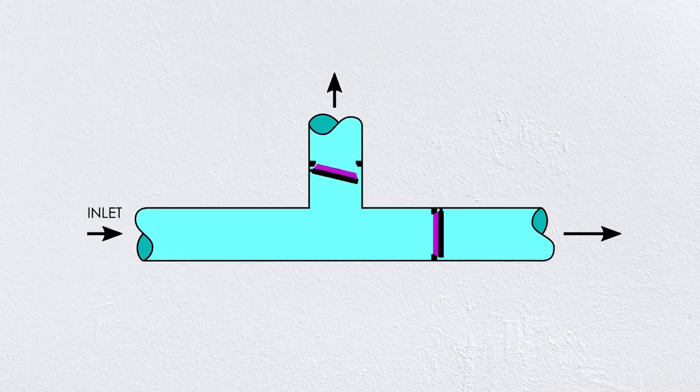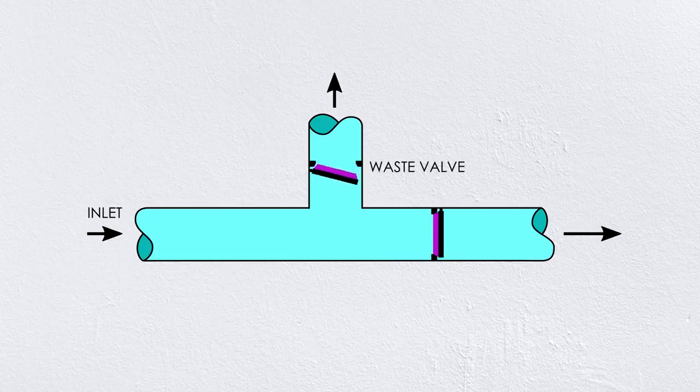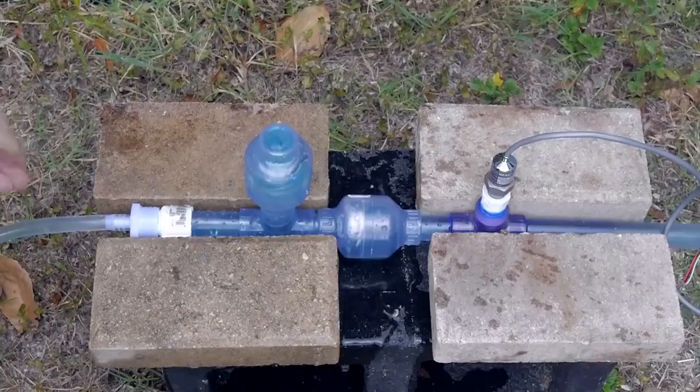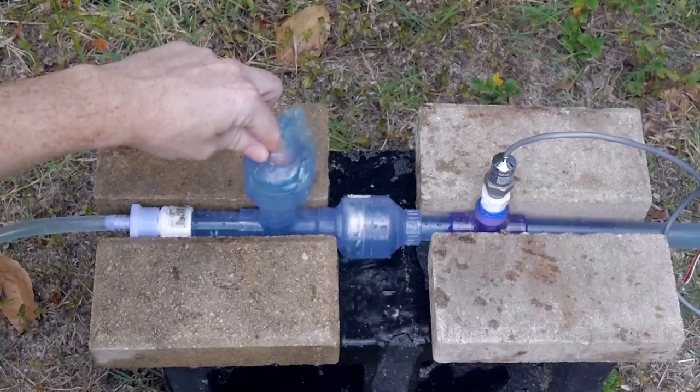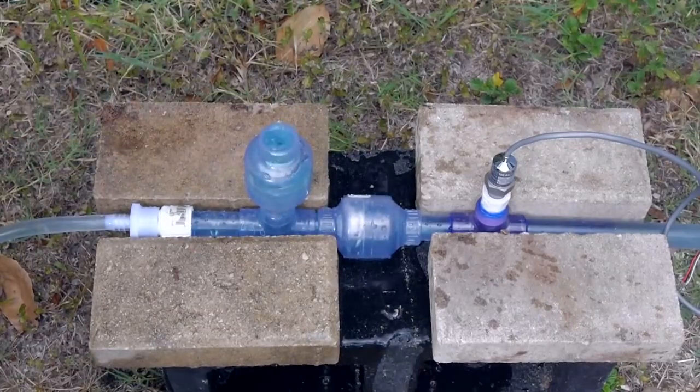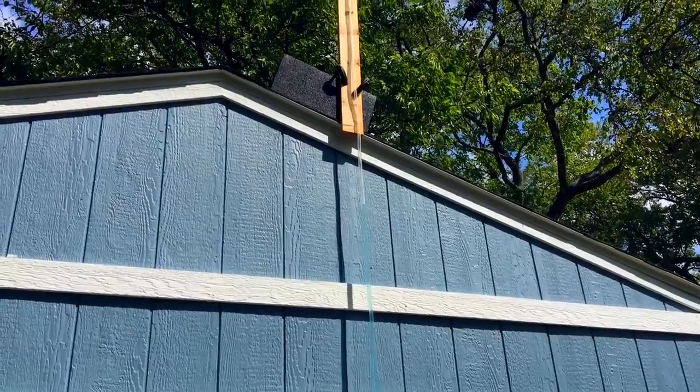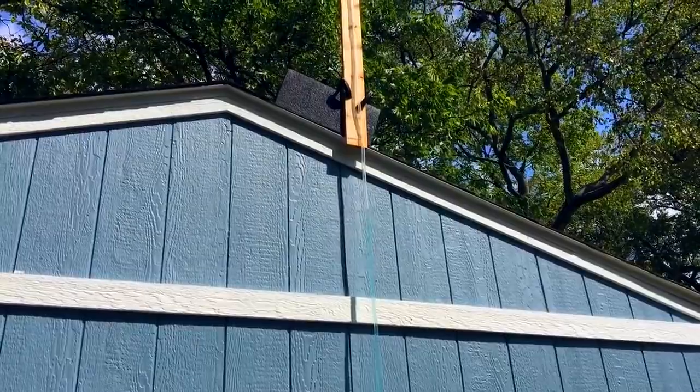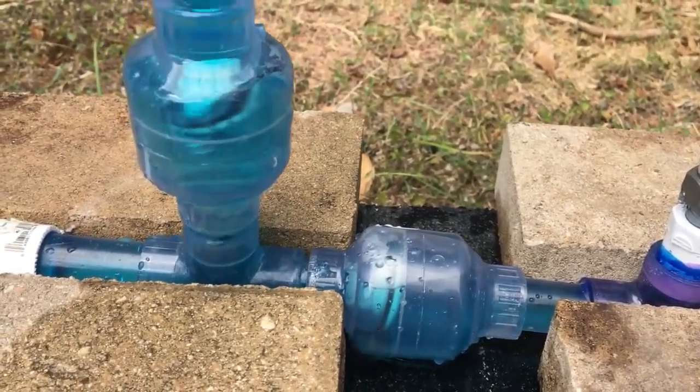A ram pump is essentially just two one-way check valves, one called the waste valve and the other called the delivery valve. To get it started, you just momentarily open the waste valve to allow water to flow. After that, it's working on its own to pump the water uphill above the elevation of the source. Pretty amazing, I think.